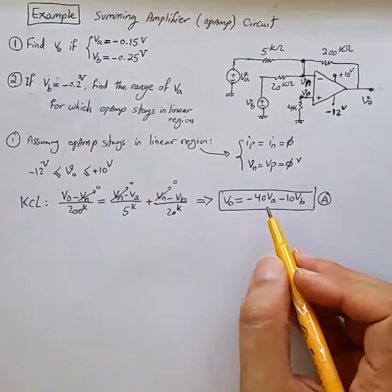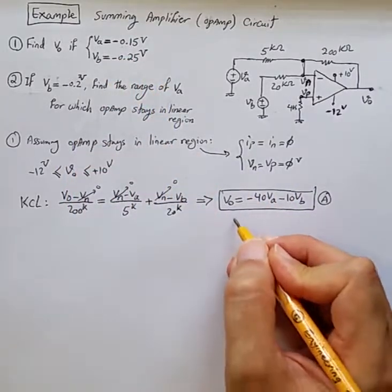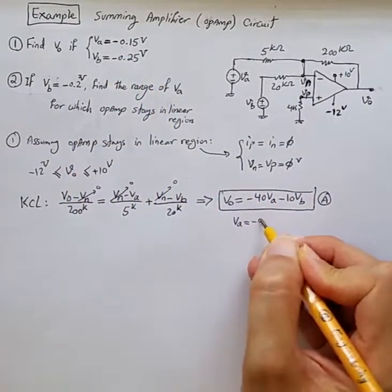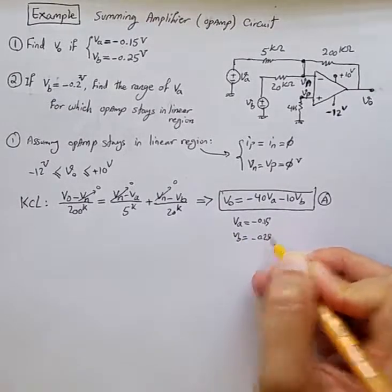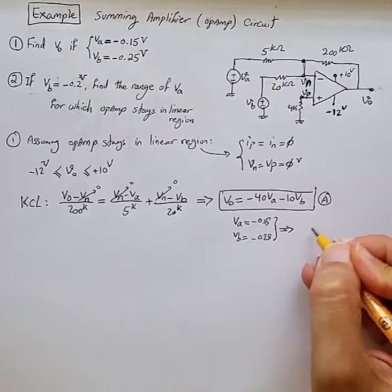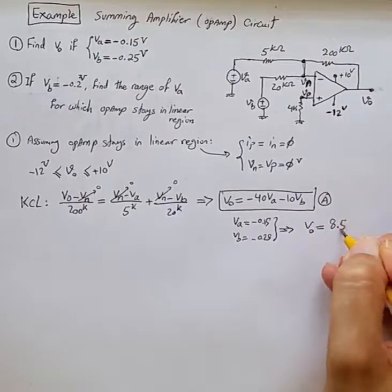Now replacing VA and VB with the values given, so VA is minus 0.15V, VB is minus 0.25V. From here we can calculate that Vout is 8.5 volts.